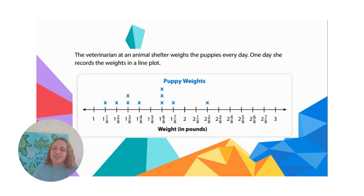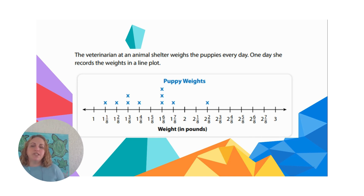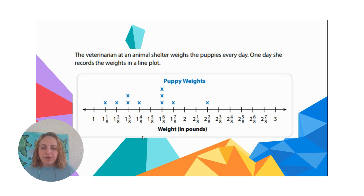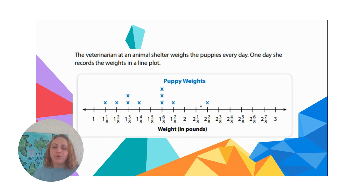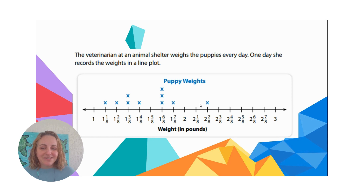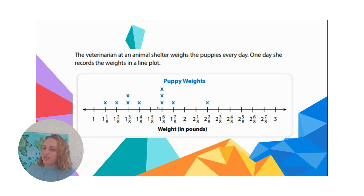Here is another line plot. This one is about a veterinarian at an animal shelter who weighs her puppies every day. One day she records the weights on a line plot. This is weight in pounds — how much each puppy weighs. These numbers represent different weights and our x's represent the puppies. What's the most common weight? Pause and see if you can figure that out. It's one and six eighths, because one and six eighths has the most x's — three puppies weigh one and six eighths pounds.